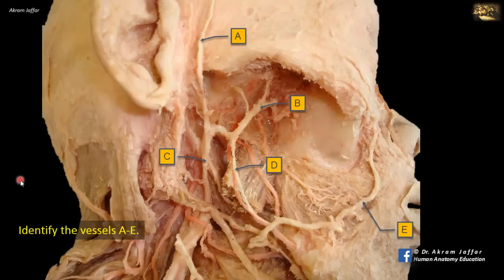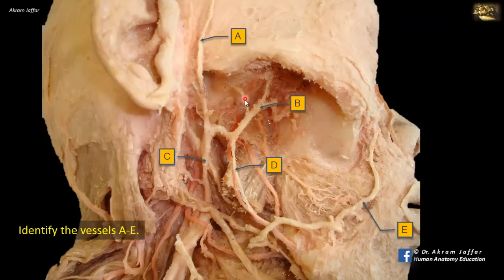Identify the vessels A to E. The ascending ramus and part of the body of the mandible have been removed, revealing structures in the infratemporal fossa medial to the ramus of the mandible. The lateral pterygoid muscle has also been removed. The large artery ascending upward, C, is the external carotid artery.